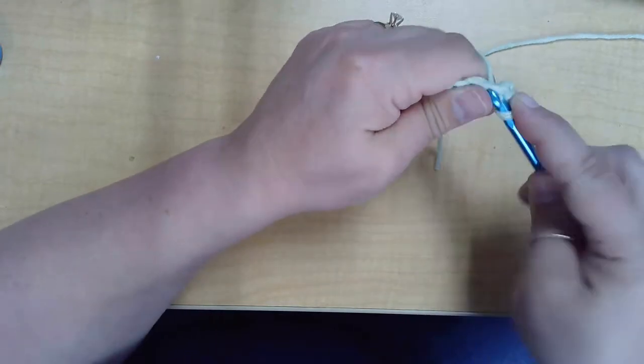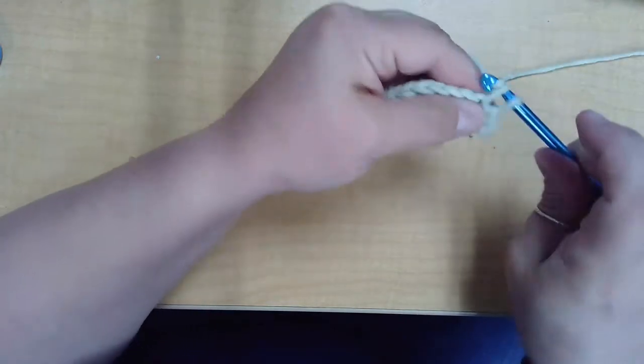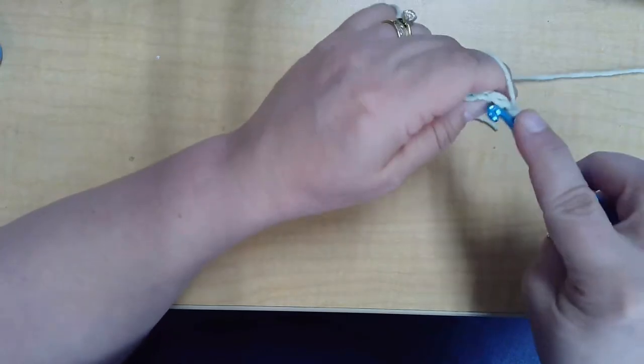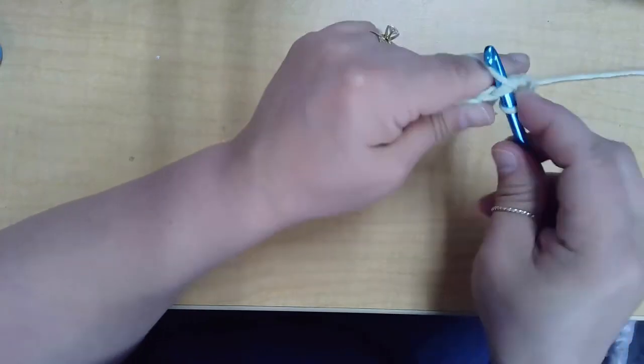So, we're working under the V's of the stitch. Yarn over, pull through, yarn over, pull through two loops.